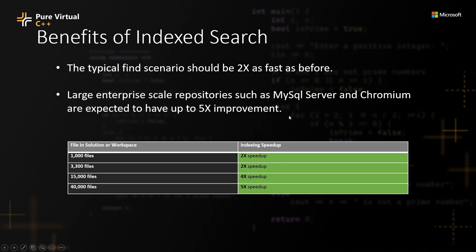Now, 5x does not sound that large — this includes the first search, during which we have to discover all the files to search and do a number of other startup tasks that we don't have to do on subsequent searches. Excluding the first search, the overall cumulative improvement can be up to 10x depending on the particular scenario, the hardware, and the size of the solution.